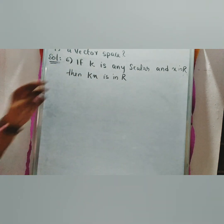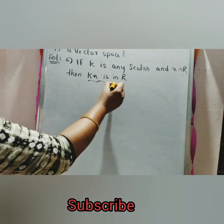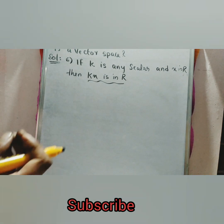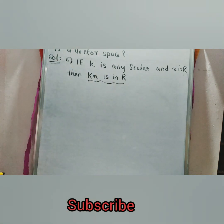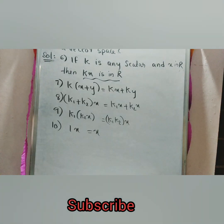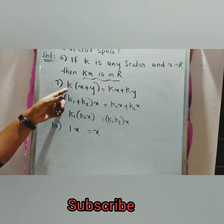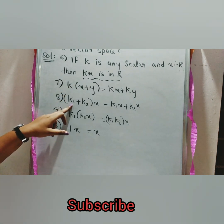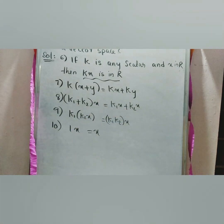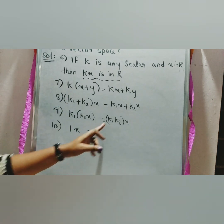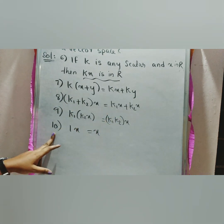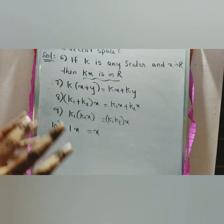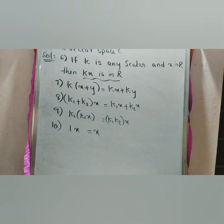Sixth property: if k is any scalar and x is in R, then kx is in R — satisfied. The seventh property: k times (x plus y) equals kx plus ky — the set of real numbers satisfies this. Eighth property: (k1 plus k2) times x equals k1x plus k2x. Ninth property: k1 times (k2 times x) equals (k1 k2) times x. Tenth property: 1 times x equals x. Since the set of real numbers satisfies all ten properties, we say that the set of real numbers is a vector space.